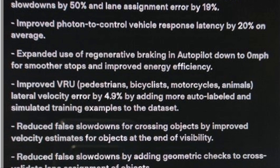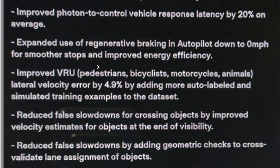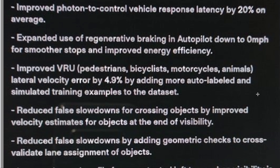The next one is my favorite — I think it's Andrej Karpathy's team just being fun about it. It's improved photon-to-control vehicle response latency by 20% on average. I believe what that's saying is from the second that a photon hits the cameras to when the vehicle makes a decision about what to do, the latency in milliseconds has been reduced by 20%. They said it in a fun way — photon to control vehicle — but that's a pretty good latency reduction. That's a fifth, so that's awesome.